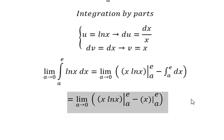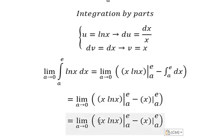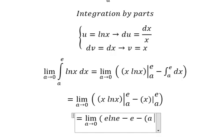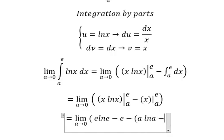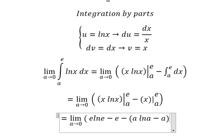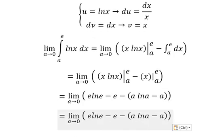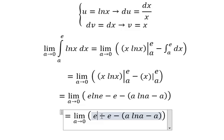And now we put a and e here and here. So that should be like this. Next, we have e ln e, which is one, times e minus e, which cancels.